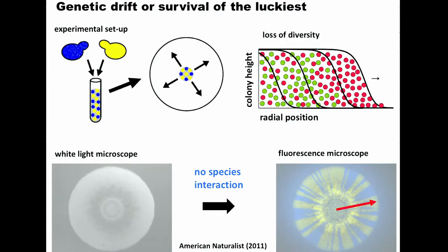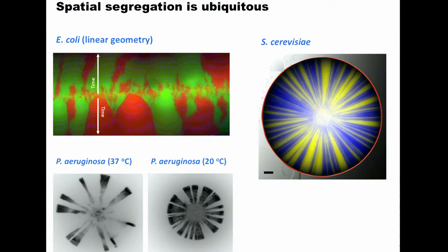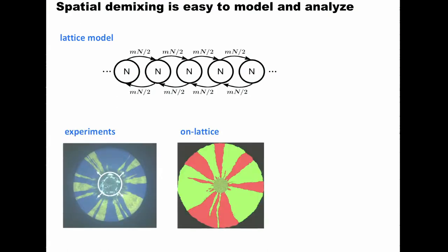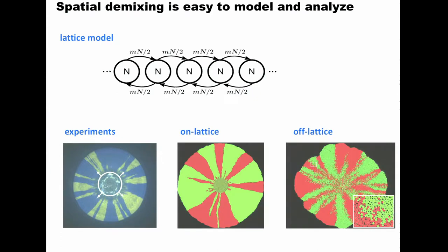These patterns occur for a variety of organisms: E. coli expanding in different geometries, lab yeast, Pseudomonas, Aspergillus, Bessosatelus, and many others. It's also straightforward to simulate these dynamics - you just populate a lattice where sites have N organisms and there's migration between sites, and you can reproduce these sectoring patterns very easily. More complex simulations where cells mechanically interact and exchange nutrients also preserve the robust behavior of sectoring and genetic drift.